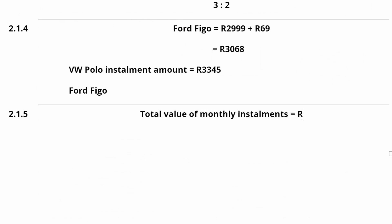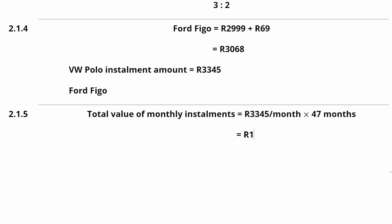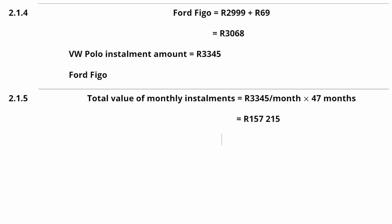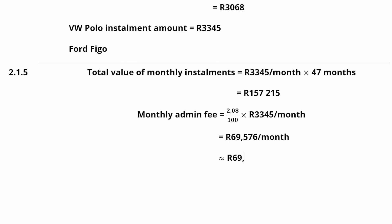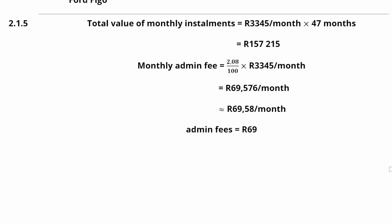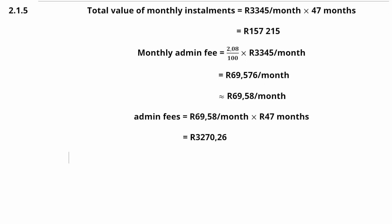The total value of the monthly installments is R3,345 × 47 months = R157,215. The admin fee is calculated in two steps: first, the Rand value for one month is 2.08/100 × R3,345 = R69.576, which rounds to R69.58 per month. The total admin fee over 47 months is R69.58 × 47 = R3,270.26.